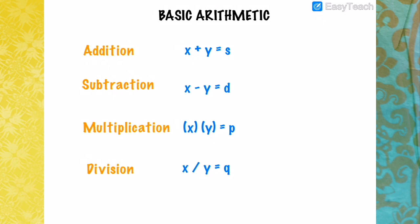In arithmetic we have four different operations: addition, subtraction, multiplication, and division. In addition, x and y are called addends and the result is called the sum. In subtraction, x is called the minuend and y is the subtrahend, and the result is called the difference. In multiplication, both are called factors — or x could be called the multiplicand and y the multiplier — and the result is the product. In division, x is the dividend, y is the divisor, and the result is the quotient.